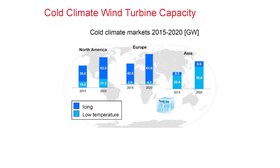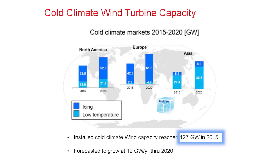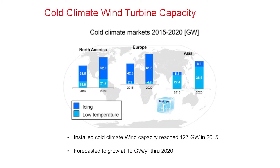Let's look at a practical example: the wind turbine industry. Due to the cold climate market evolution in this area from 2015 to 2020, you see that in all regions, turbines in cold climates are increasing. The installed cold climate capacity reached 127 gigawatts in 2015, and it's forecasted to grow by 10% through 2020. In these wind turbine installations, a lot of greases are used for pitch and yaw bearings.